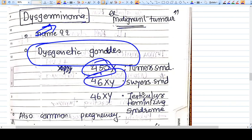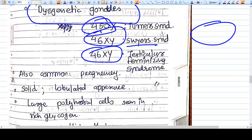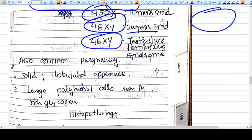Where do we see dysgenetic gonads? Turner syndrome like 45XO, or 46XY Swyer syndrome, or testicular feminization syndrome. Here the gonads, whether testes or ovary, are dysgenetic, so we find this kind of tumor. In males also, if the testes are undescended, there's a risk of dysgerminoma in those gonads.